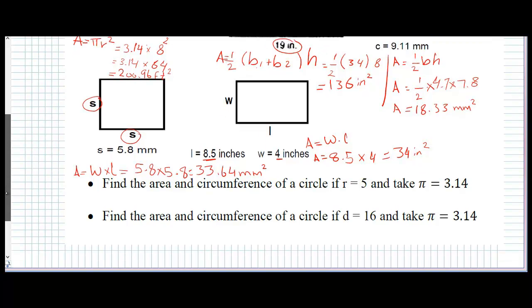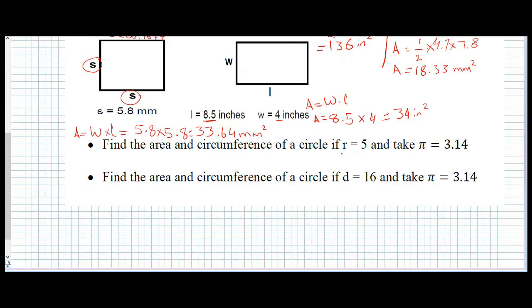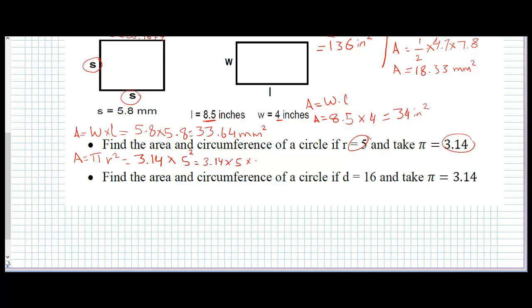Find the area of a circle if the radius equals 5, taking pi as 3.14. Our rule is area of circle equals pi r squared. So area equals 3.14 multiplied by 5 squared, which means 3.14 times 5 times 5. The answer will be 78.5 units squared.